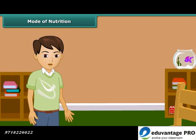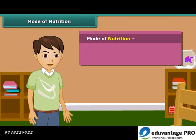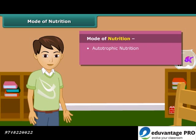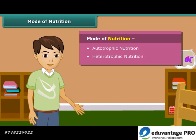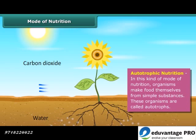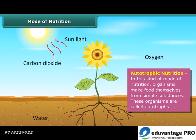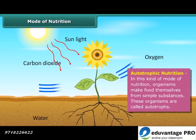Now let's know about the mode of nutrition. There are two types of nutrition modes: autotrophic nutrition and heterotrophic nutrition. The mode of nutrition in which organisms make food themselves from simple substances is called autotrophic nutrition, and these organisms are called autotrophs.